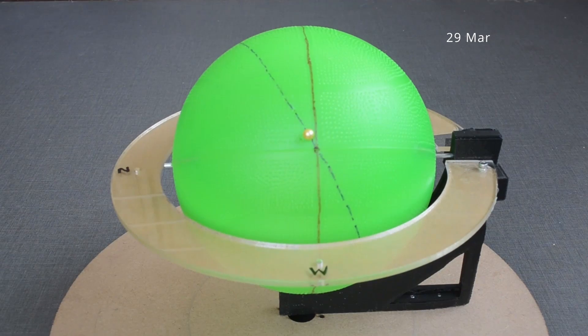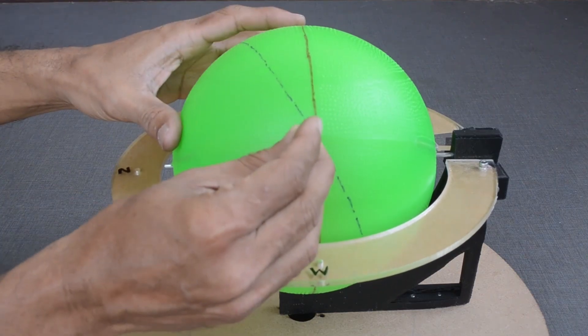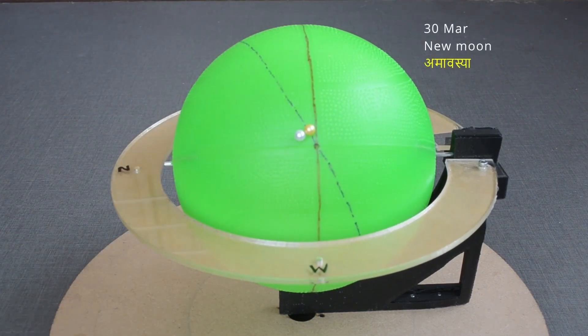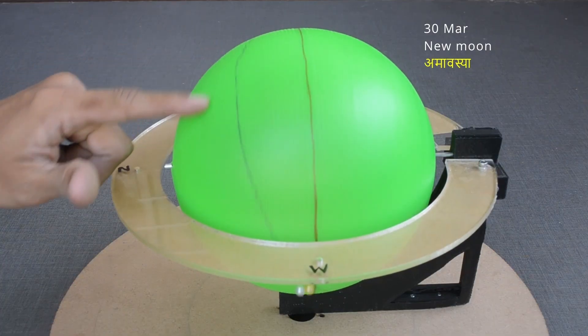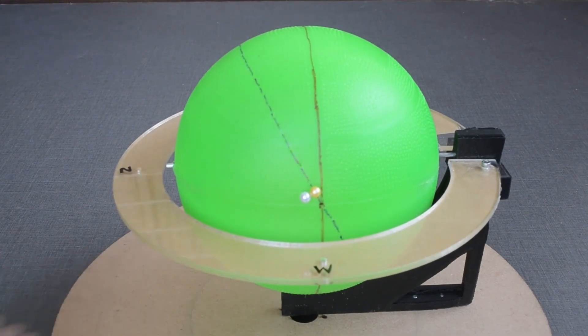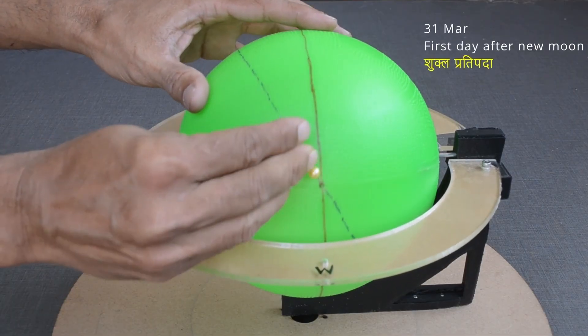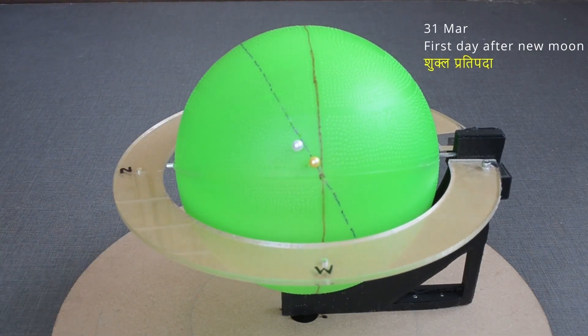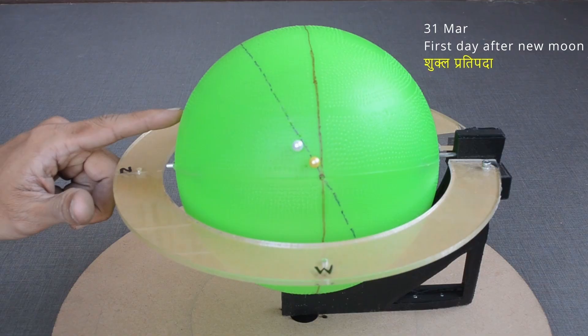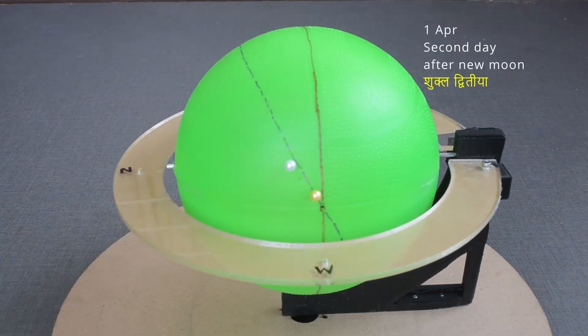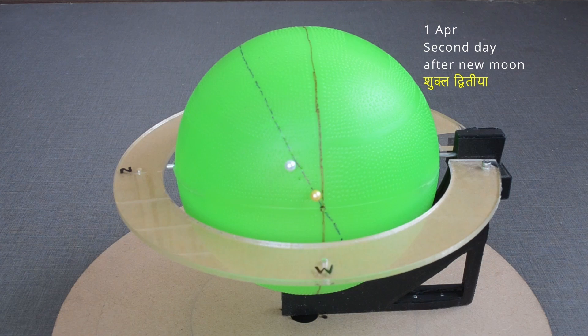On a new moon day, that is Amavasya, location of the moon will be somewhere here. This white bead will be our moon. Rotating sphere once shifts the position of the moon as well as the sun on the ecliptic. As time passes, the distance between the sun and moon changes, at the rate of 12 degrees of angular separation per day, one tithi in particular as per the Hindu calendar.